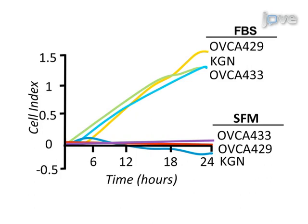In contrast, KGN ovarian cancer spheroids exhibited the capacity to invade toward a chemo-attractant. A comparison of the invasive capacity of KGN, OVCA 429, and OVCA 433 cell lines over a 24-hour period showed that over the two-day assay, all three cell lines exhibited the capacity to invade toward a chemo-attractant, as indicated by increasing cell indices. The cell lines exhibited similar rates of invasion indicated by parallel line slopes; however, the OVCA 429 curve exhibited a higher upper asymptote, indicating a higher maximal level of invasion compared to the other cell lines.